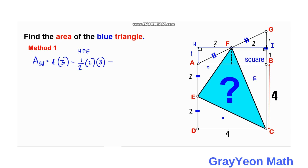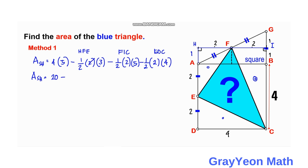We need to deduct the other triangles: one-half times 2 times 5 for triangle FIC, minus one-half times 2 times 4 for triangle ADC. So the area of the rectangle is 20, minus 3, minus 5, minus 4, which equals 8 square units. That is our answer for the first method.